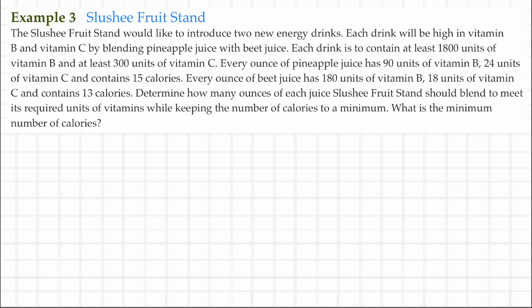We continue our minimization problems with this example. The slushy fruit stand would like to introduce two new energy drinks. Each drink will be high in vitamin B and vitamin C by blending pineapple juice with beet juice. Each drink is to contain at least 1,800 units of vitamin B and at least 300 units of vitamin C. Every ounce of pineapple juice has 90 units of vitamin B, 24 units of vitamin C, and contains 15 calories. Every ounce of beet juice has 180 units of vitamin B, 18 units of vitamin C, and contains 13 calories. Determine how many ounces of each juice the slushy fruit stand should blend to meet its required units of vitamins while keeping the number of calories to a minimum. What is the minimum number of calories?